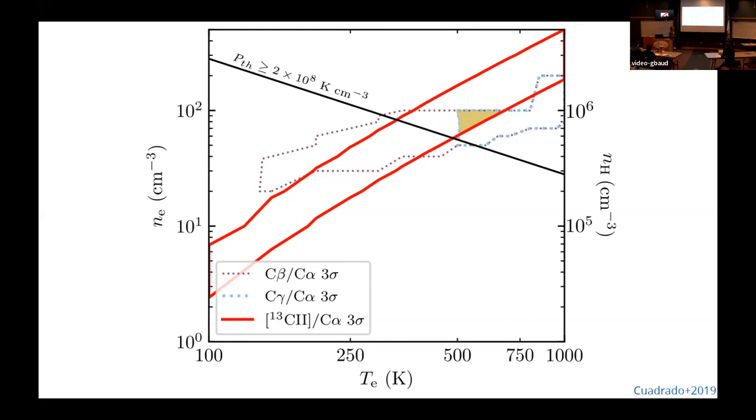you get this small region of gas properties that's allowed by the models. So you can then derive the density, volume density of the gas and the temperature, which is great. Because then you can also study the thermal pressure, the turbulent pressure of the gas and other things.